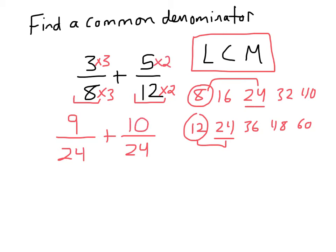So now they're both written with like denominators, so I can just add the numerators. It's 9 plus 10, 24ths, or 19 twenty-fourths. And 19 is a prime number. It can't be reduced. There are no common factors of 19 and 24. So that's my answer in lowest terms.